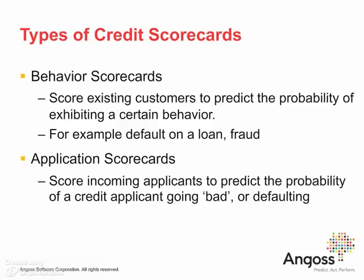There are two main types of credit scorecards widely used within the finance industry: behavior scorecards and application scorecards. Behavior scorecards help predict the probability that an existing customer will exhibit a certain behavior, for example default on a loan or the likelihood to be a fraudulent customer. Application scorecards are used to predict the probability of a prospect going bad, where bad could be defined as default on borrowed credit. Usually the decision is based on the initial information the applicant provides on the application they complete for a financial institution where they apply for credit.